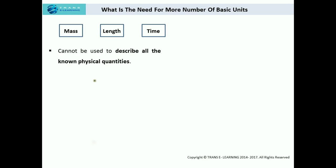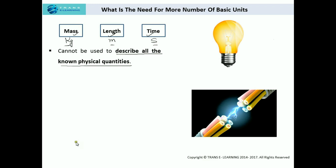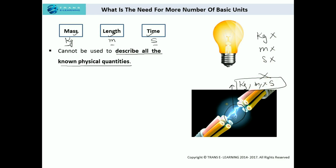First of all, what is the need for more number of basic units? The three fundamental quantities are mass, length, and time, and as discussed in the previous video their fundamental units are kg, meter, and second. With the growth of scientific techniques and knowledge over time, it was realized that these three units cannot be used to describe all known physical quantities. For example, light and electric current — I cannot express light or electric current in kg, meter, or second.